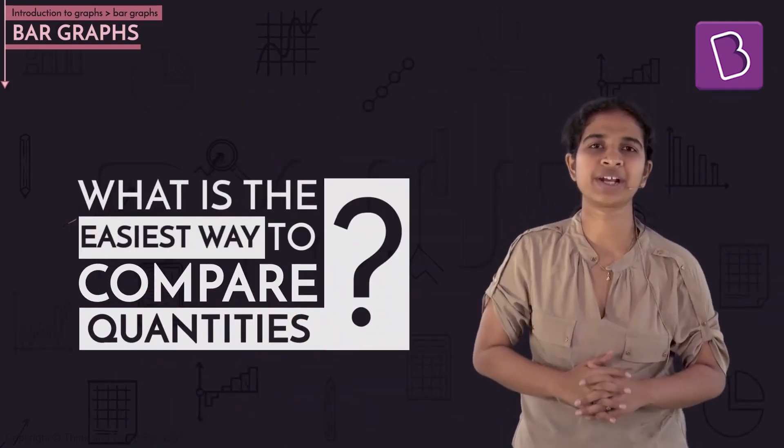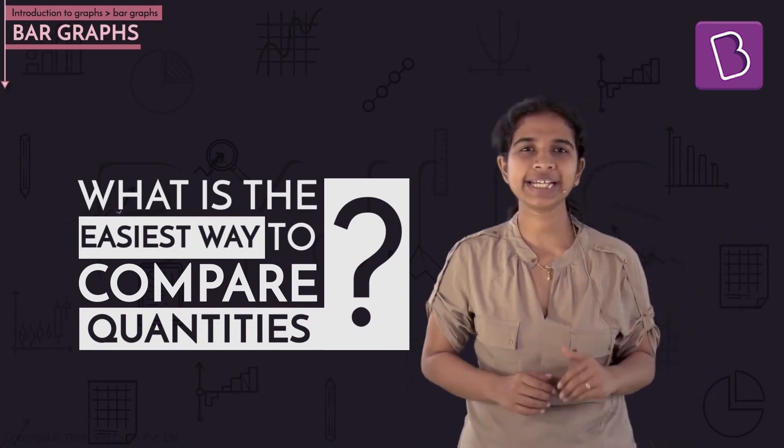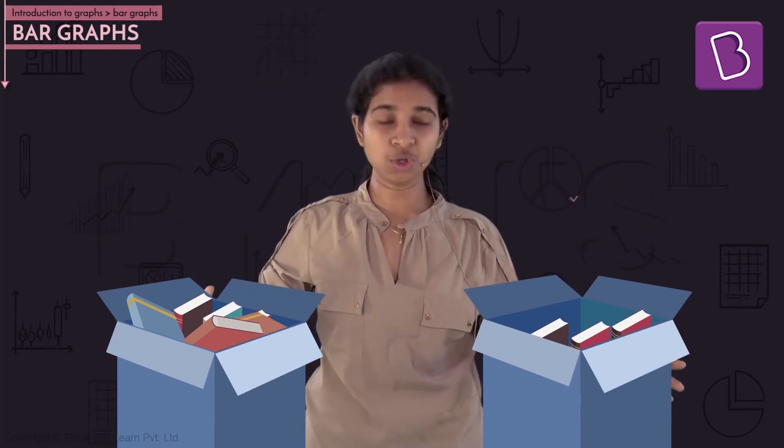What is the easiest way to compare quantities? Suppose you are given two boxes filled with books. The boxes look to be of the same size, but clearly one has more books than the other — it looks more filled up. But how much more? It's very hard to say just by looking at the books lying in the box. A more useful way might be to stack them up, since all the books are individually the same size.